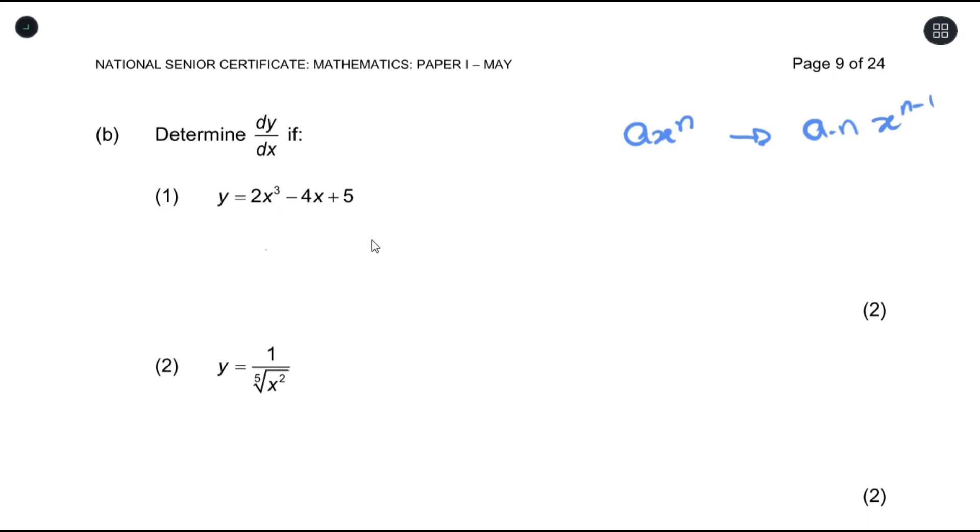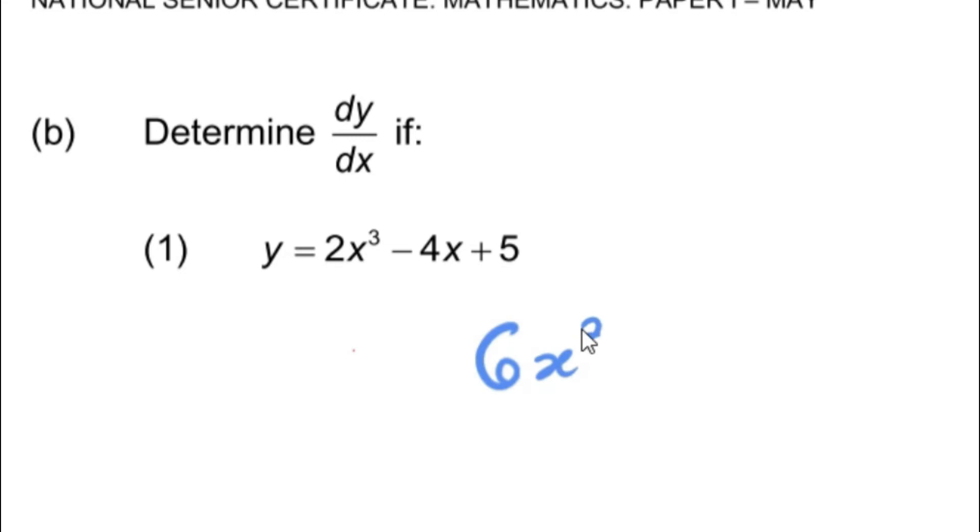So in this case here, this would give you 6x squared minus 4.